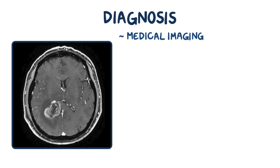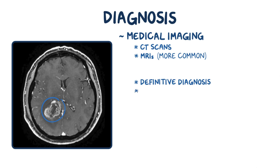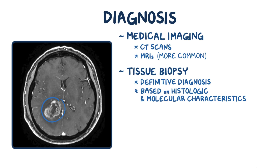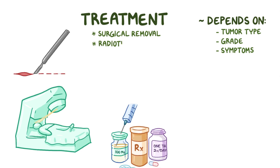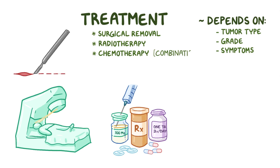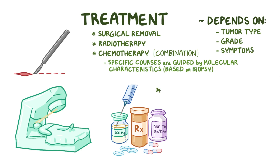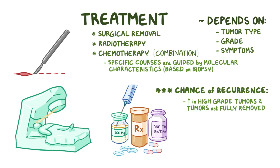The diagnosis of central nervous system tumors includes medical imaging like CT scans, but more commonly MRIs. Definitive diagnosis needs to be made based on the histologic and molecular characteristics of a tissue biopsy. Treatments depend on the tumor type, grade, and symptoms, but can include surgical removal, radiotherapy, or chemotherapy — frequently in combination. Specific courses of treatment are guided by the molecular characteristics of the tumor based on the biopsy. The chance of recurrence gets higher in high-grade tumors and in tumors that have not been fully removed or destroyed.